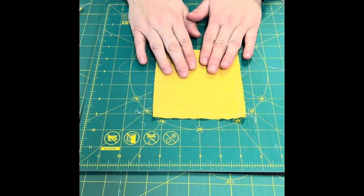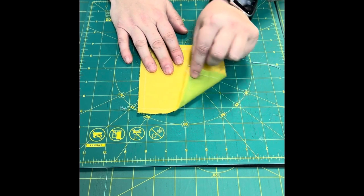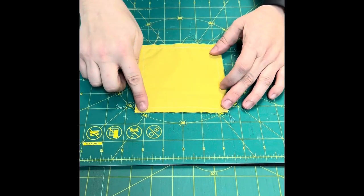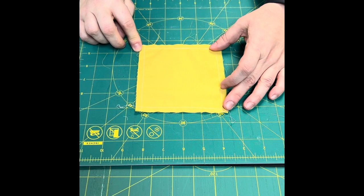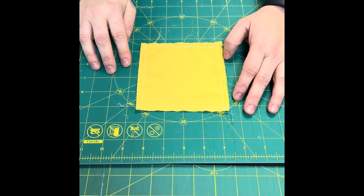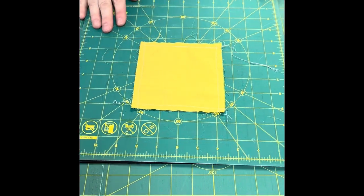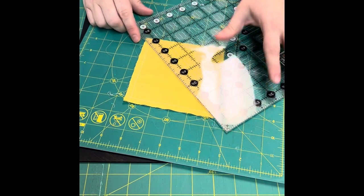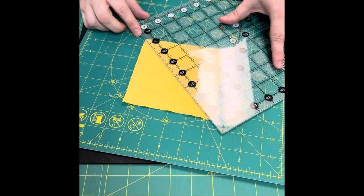What I've done is I've placed my two blocks right sides together and I've sewed a quarter inch all the way around my block. Once you've done that you're wondering how am I going to get this to work. Basically what you're going to do is you're going to align your ruler edge to edge.